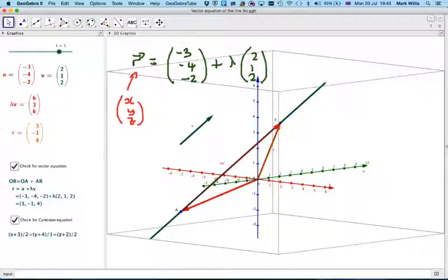It will be written as, it seems a bit strange, (x+3)/2 = (y+4)/1 = (z+2)/2.